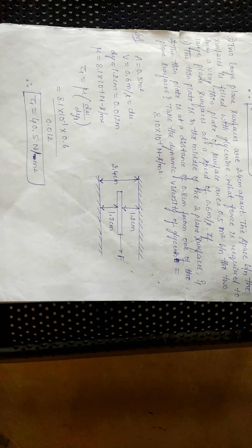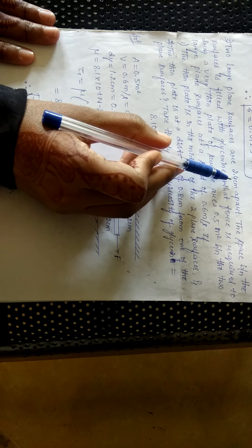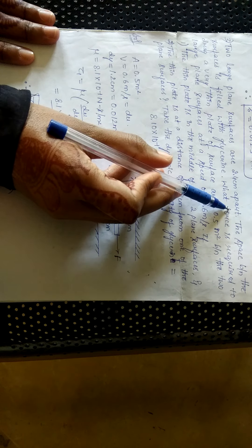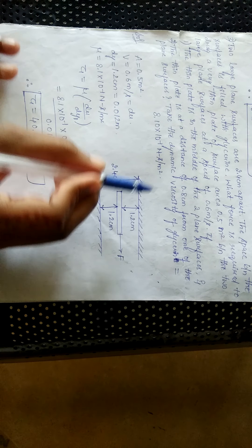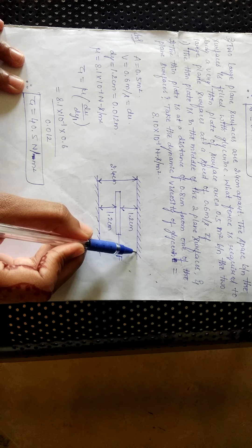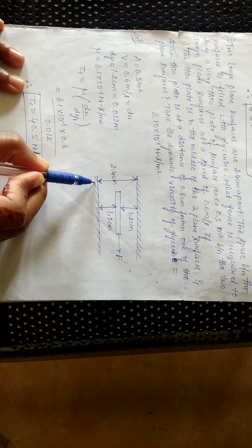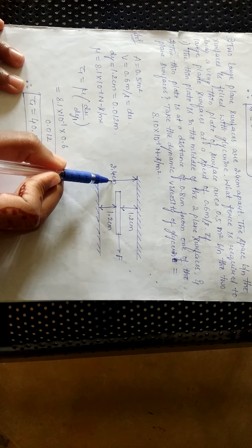Now let us start solving this problem. Let us start writing the given data. Two plane surfaces are given, which are 2.4 cm apart. Let us draw two horizontal lines — this is the upper plate and this is the lower plate. The gap between these two plates is 2.4 cm.